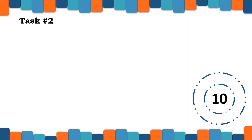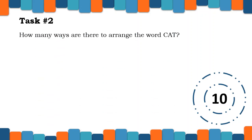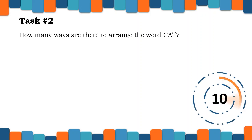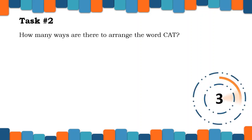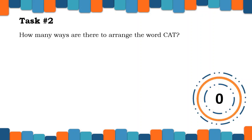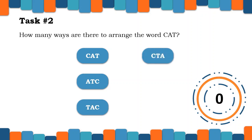Let us do task number 2. How many ways are there to arrange the word CAT or C-A-T? You have 10 seconds to think of different arrangements. Your timer starts now. Excellent, class! Through counting, there are 6 possible arrangements in the word CAT: CAT, ATC, TAC, CTA, ACT, and TCA.